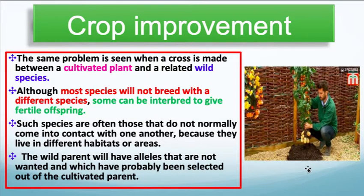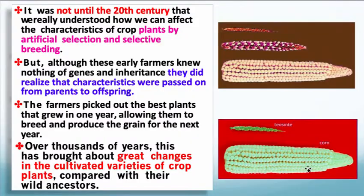The same problem is seen when a cross is made between a cultivated plant and a wild species. Although most species do not breed with different species, some can and produce fertile offspring. Such species are often those that do not normally come in contact because they live in different areas. The wild parent will have alleles that are not wanted and which have probably been selected out of the cultivated parent. Although early farmers knew nothing of genes and inheritance, they realized that characteristics were passed from parents to offspring. The farmers picked out the best plants that grew in one year, allowing them to breed and produce grain for the next year, and over thousands of years this brought about great changes in cultivated varieties compared with their wild ancestors.